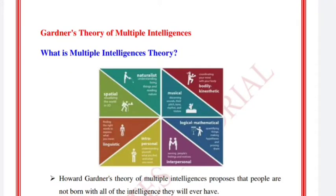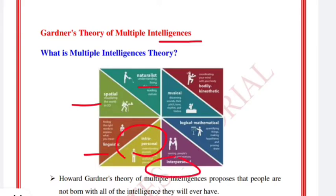Hello everyone, you are welcome to Best Notes Tutorial. In this video we are going to talk about Gardner's Theory of Multiple Intelligence. We are asked some questions from this theory, so we are going to cover: naturalist, spatial, linguistic, interpersonal, intrapersonal, logical-mathematical, bodily-kinesthetic, and musical.